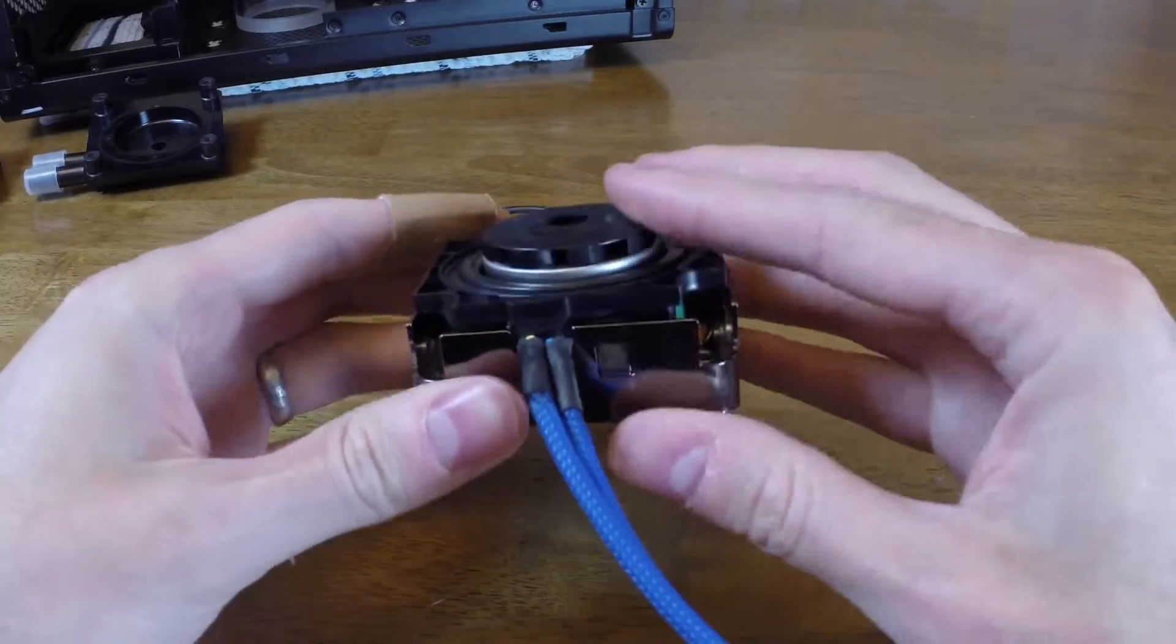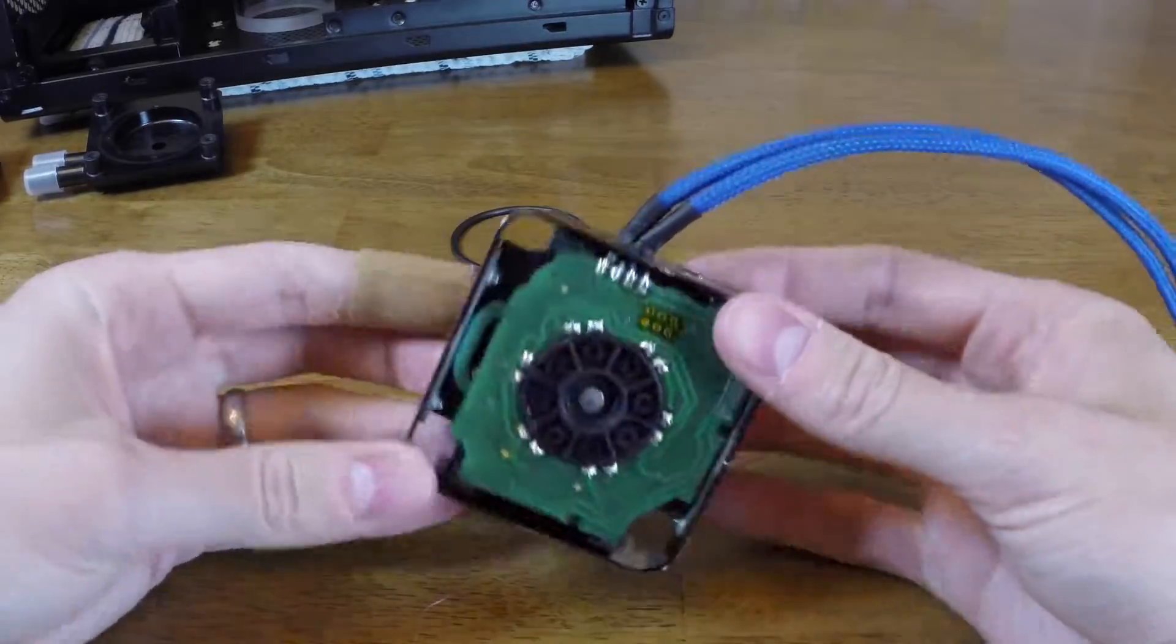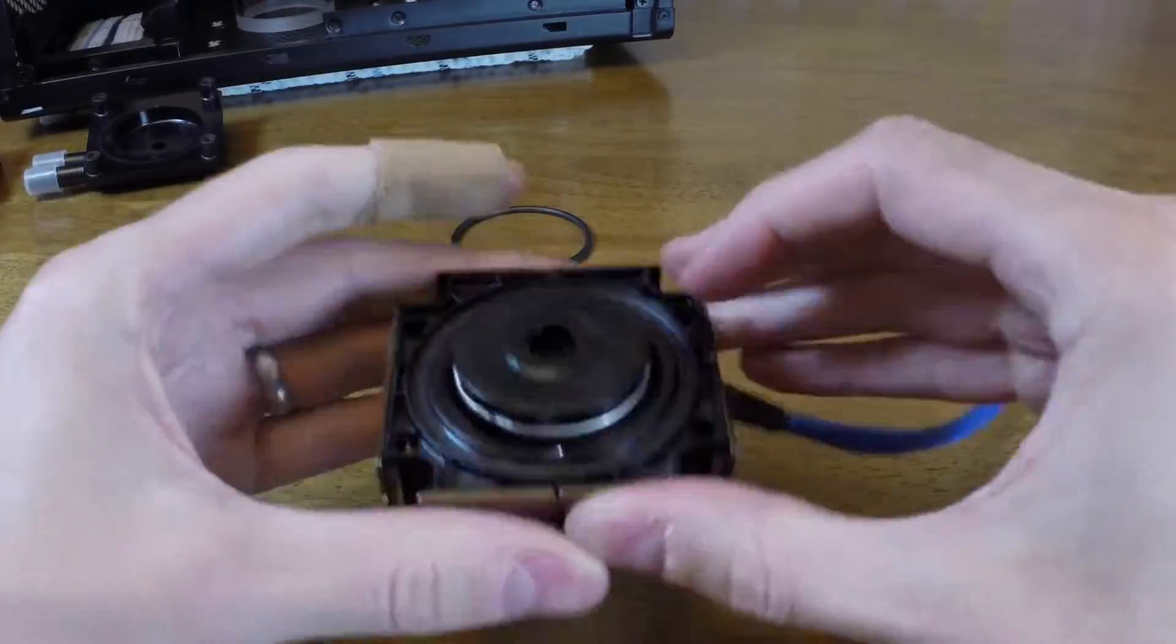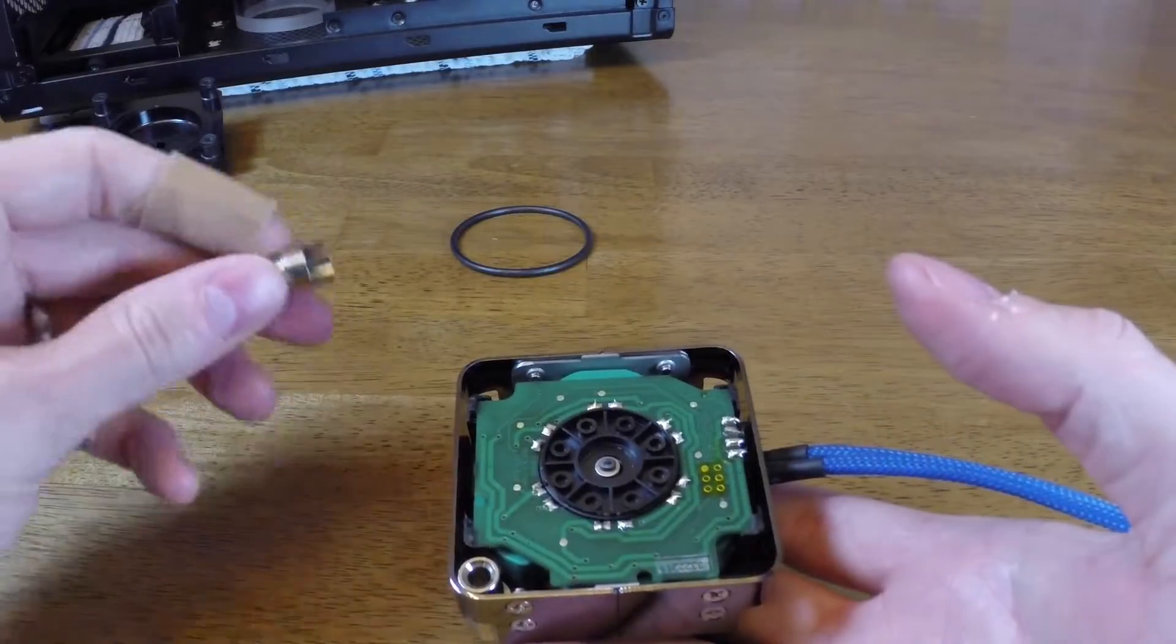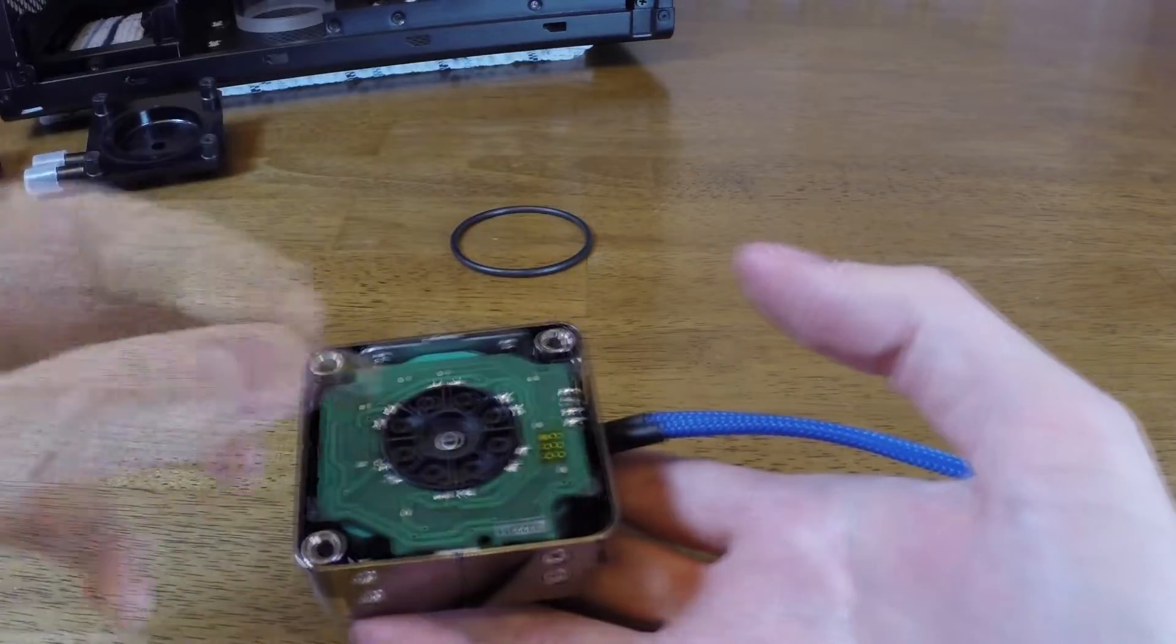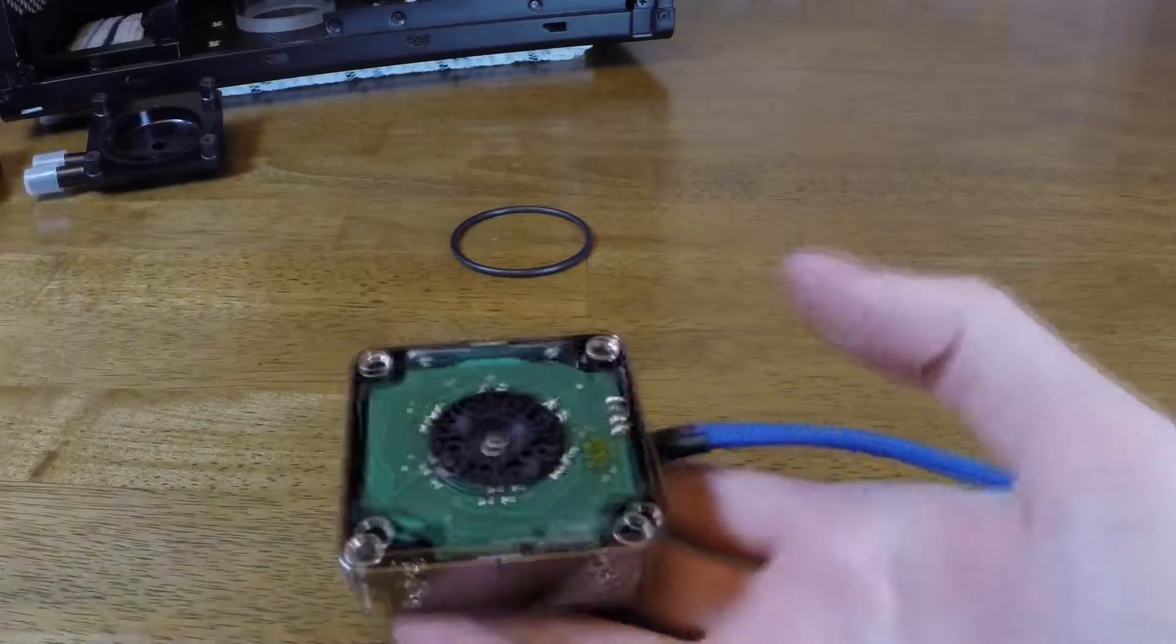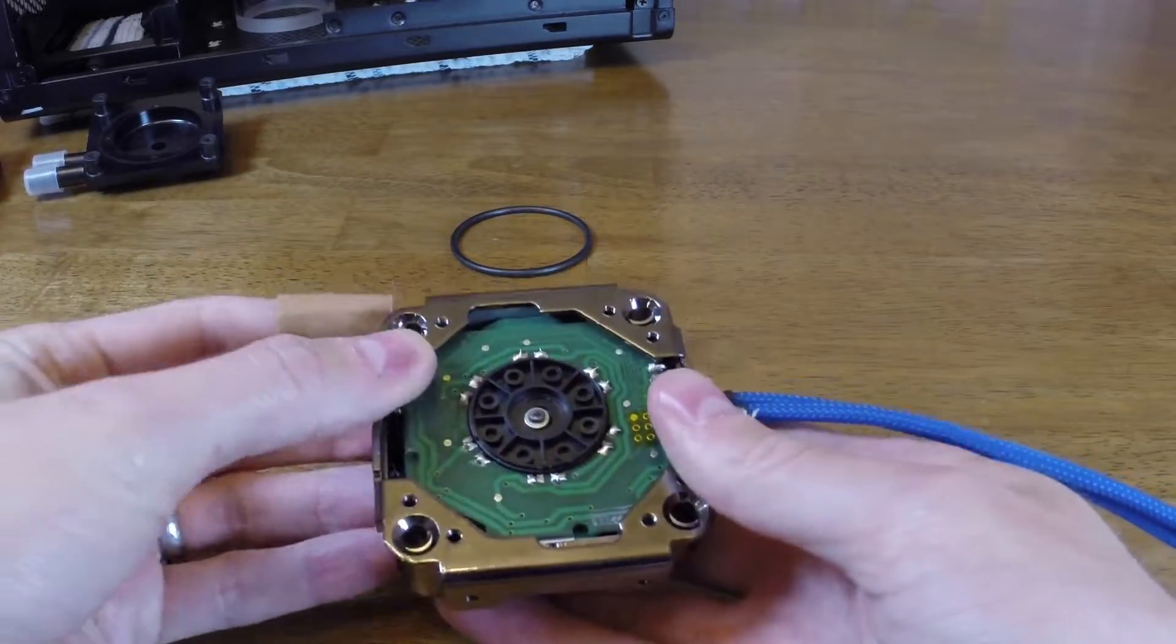Place the pump into the new casing making sure that the wires fit the little cutout. Next, install the metal spacers on the corners of the pump. These spacers might be attached to the casing depending on the brand you go with. Next, attach the base of the new casing.